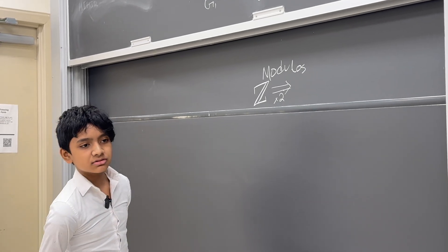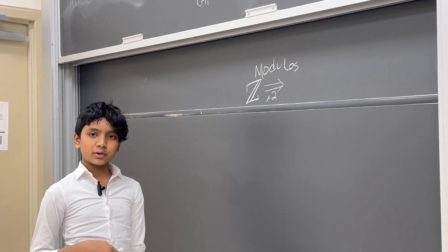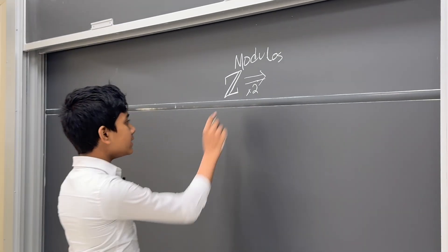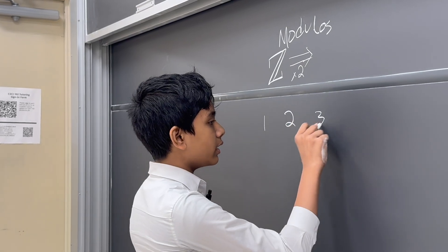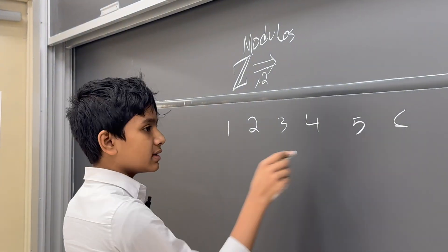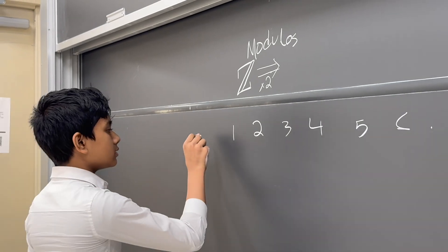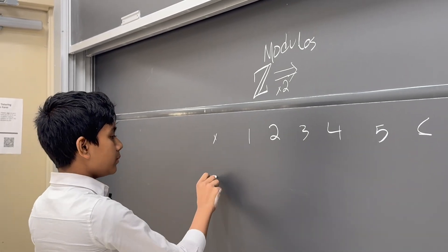Now normally that would just map the real numbers to the real numbers again. But for the integers, it maps them to the even numbers. So if you have 1, 2, 3, 4, 5, and 6, etc., this is the input.